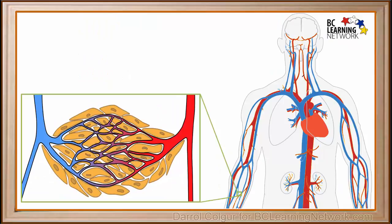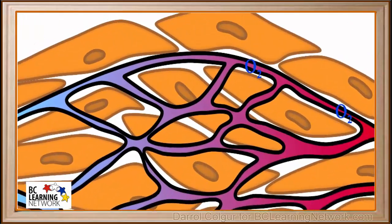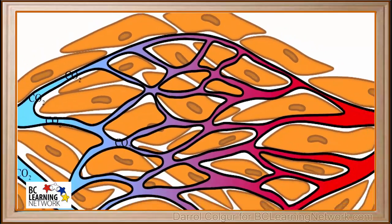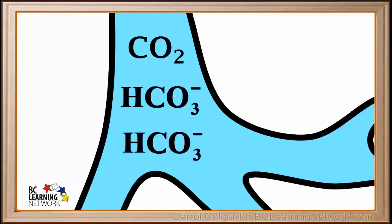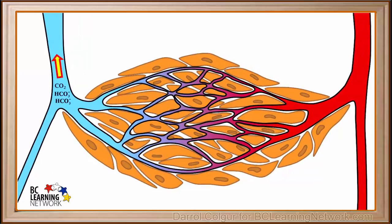If we zoom into the muscle tissue at this spot, we see that the oxygen that was picked up at the lungs enters the capillaries here, diffuses into the cells, cellular respiration takes place and carbon dioxide is produced, which then goes into the capillaries and into the veins, where some of it is converted to bicarbonate ions. Bicarbonate and CO2 then travel back to the lungs, and CO2 is exhaled from the body, and the whole process just keeps on repeating itself over and over again.